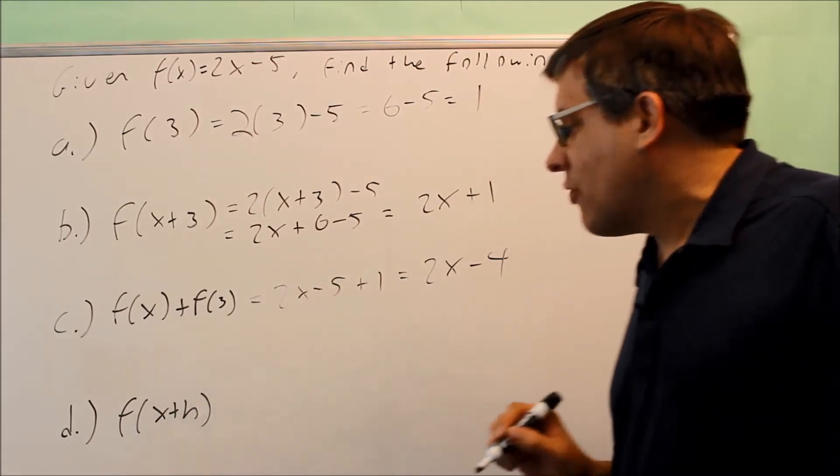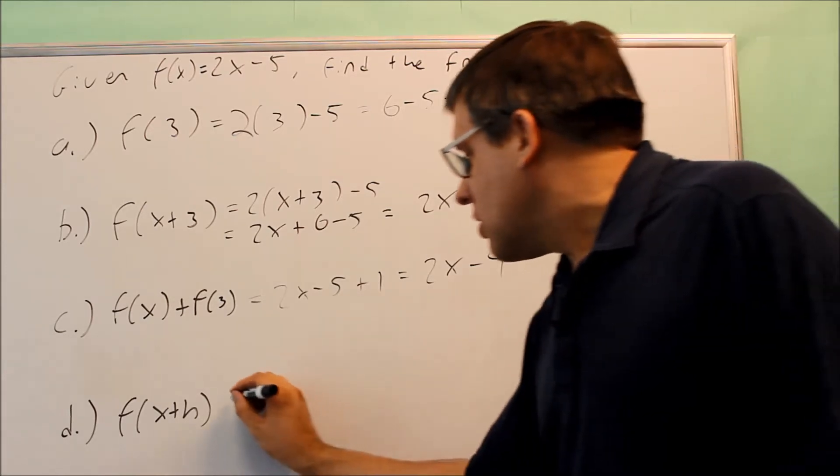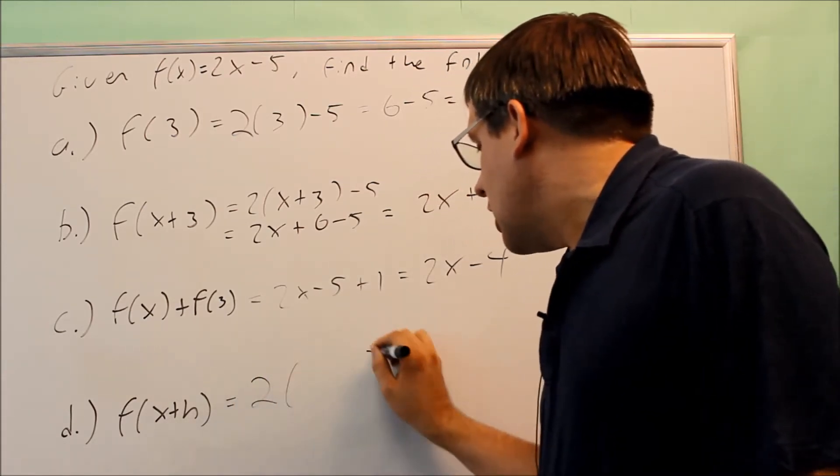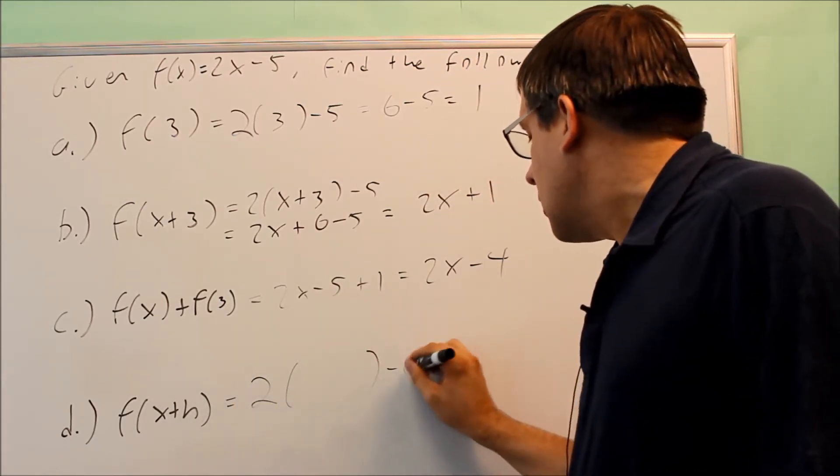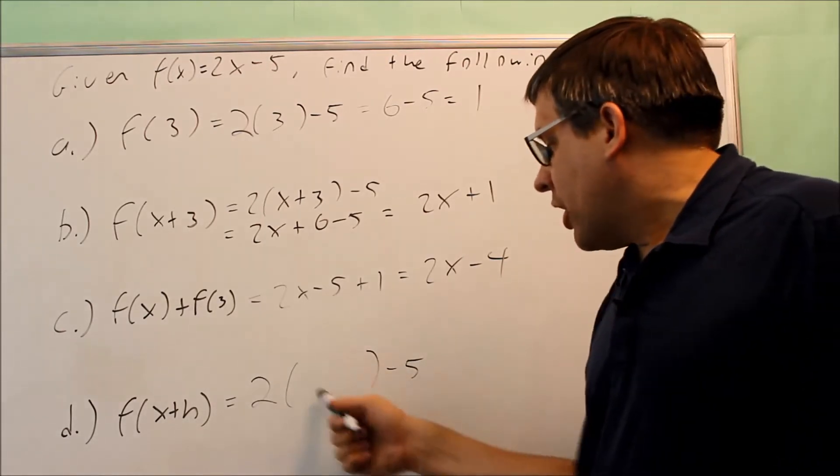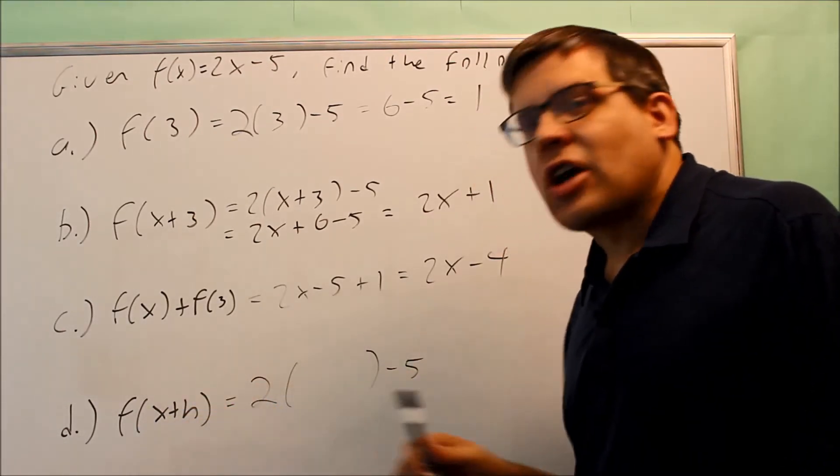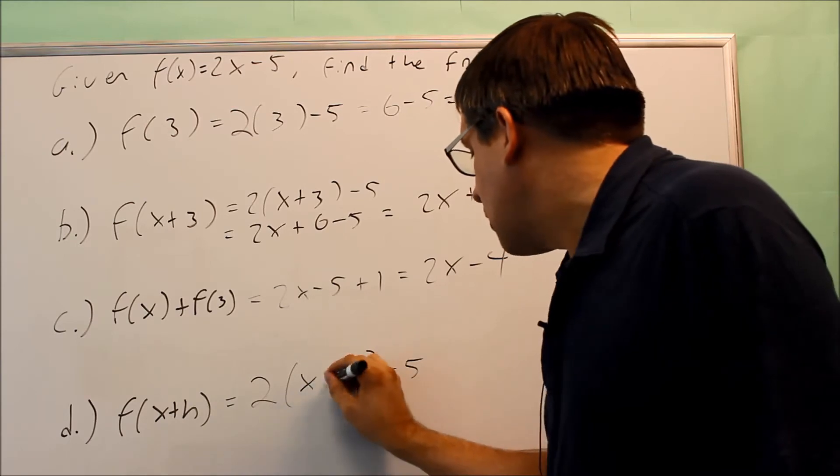The last one, they want us to find f(x+h). So we're still going to do the same thing. We have 2 times a blank minus 5. The blank here gets filled in with whatever's inside the parenthesis there. That's x + h.